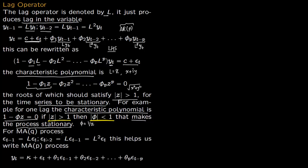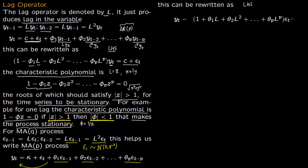Now consider the moving average MA(q) process. Here ε(t-1) is L·ε(t), and ε(t-2) is L²·ε(t). The MA(q) process is y(t) = κ + ε(t) + θ₁·ε(t-1) + θ₂·ε(t-2) + ... + θq·ε(t-q), where each ε is drawn from a normal distribution with mean 0 and variance σ². Bringing the lagged error terms to the left-hand side leaves only κ on the right.